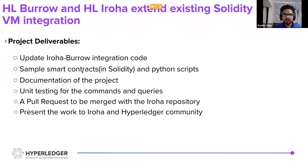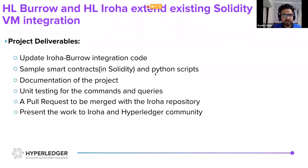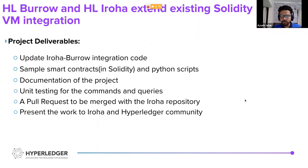The deliverables were to update the Iroha-Burrow integration code with all the remaining commands and queries, provide sample smart contracts written in Solidity and Python scripts which use those smart contracts, have complete documentation of the project to help users understand how the integration works so they can use it in their future work, have unit testing of the commands and queries, merge my work with the current Iroha repository on GitHub, and finally to present my work to both the Hyperledger and Iroha community.